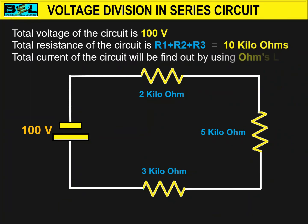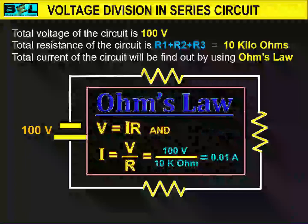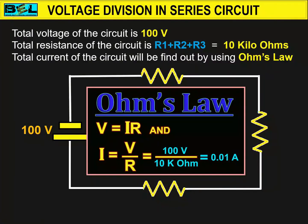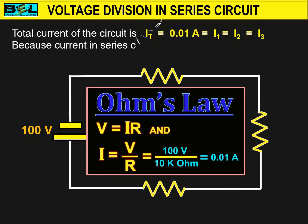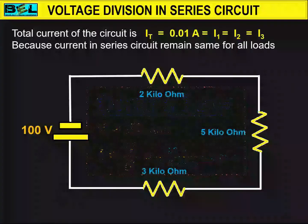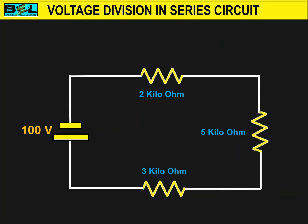The total current of the circuit will be found using Ohm's law. The current for resistor 1, resistor 2, and resistor 3 is 0.01 Ampere. So IT is equal to 0.01 Ampere, which is equal to I1, equal to I2, equal to I3, because current in a series circuit remains the same for all loads.